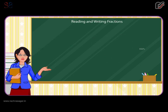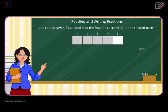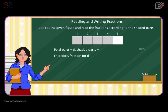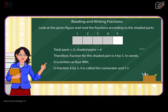Reading and Writing Fractions. Look at the given figure and read the fractions according to the shaded parts. Total parts is equal to five. Shaded parts is equal to four. Therefore, the fraction for the shaded part is four by five. In words, it is written as four fifth. In the fraction four by five, four is called the numerator and five is called the denominator.